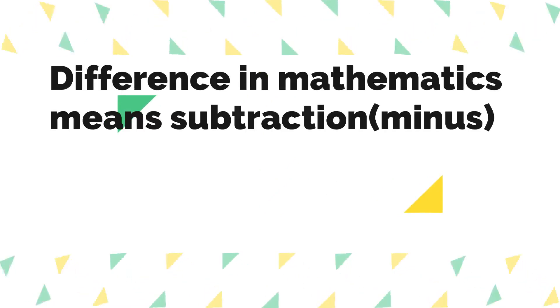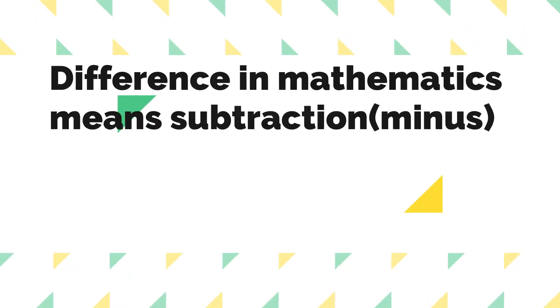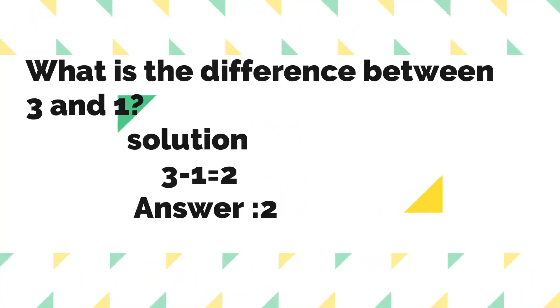When we talk about difference in mathematics, it means minus or subtraction. For example, when you are asked what's the difference between three and one, it means three minus one, and the answer is two. Similarly, when asked what's the difference between seven and four, it's seven minus four, which equals three.